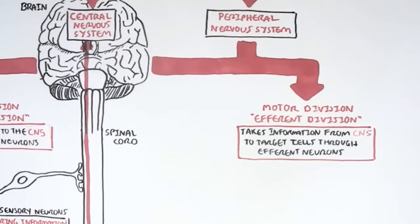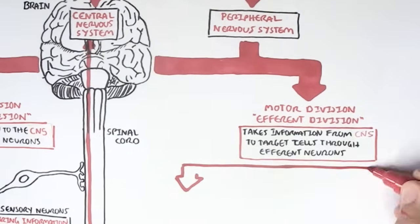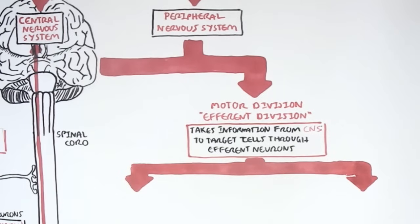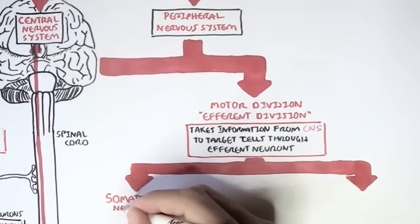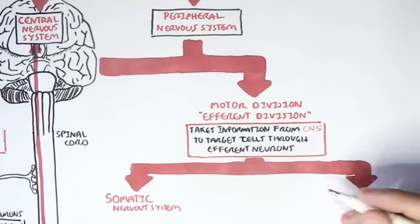The signals being sent from the central nervous system to the target cell can be voluntary, meaning consciously controlled, or involuntary, meaning without our control. An example of an involuntary response is our heart, because we have no control over our heartbeat. Because there is a voluntary and involuntary efferent neuron, we further divide the efferent division of the peripheral nervous system into the somatic nervous system and the autonomic nervous system.